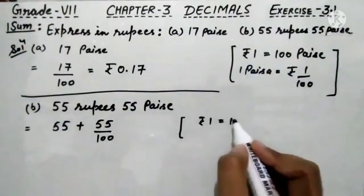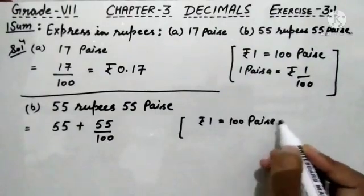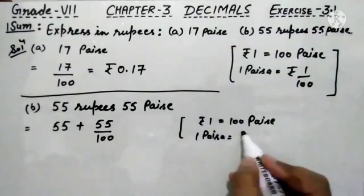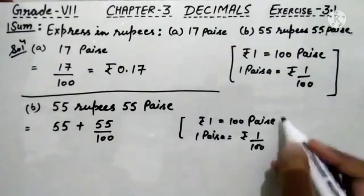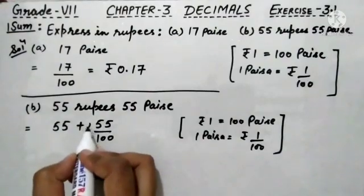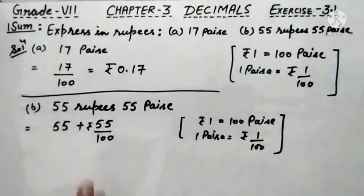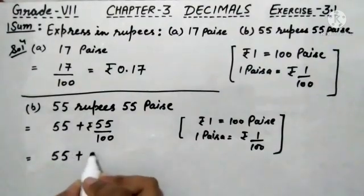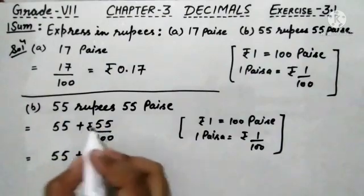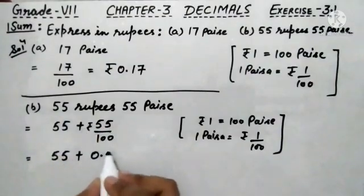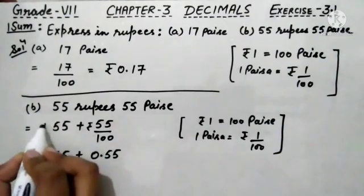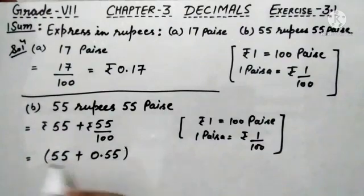1 rupee is equals to 100 paise. Therefore, 1 paise will be equals to rupees 1 upon 100. So whenever we are dividing the given paise by 100, the unit will be converted into rupees. This can be written as 55 plus 0.55. Two zeros are there; we leave two digits and place a decimal. So this will be equals to 0.55.